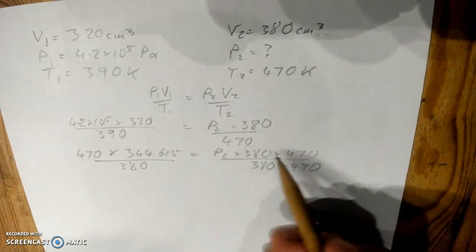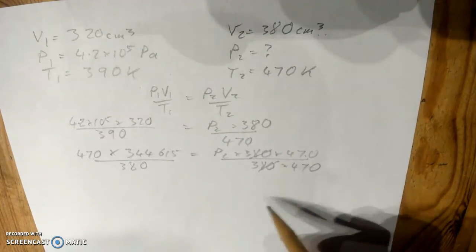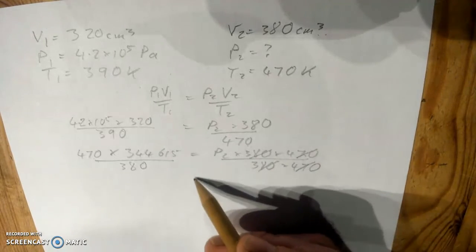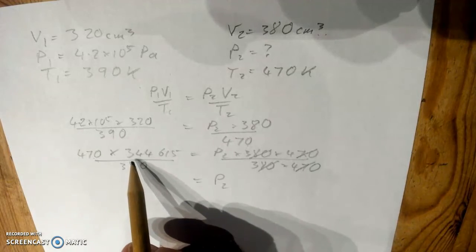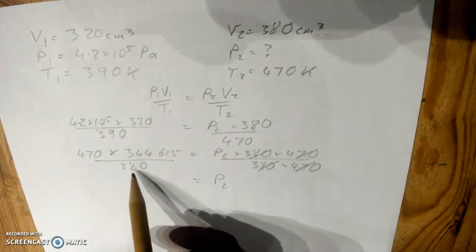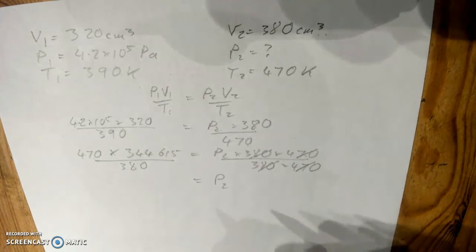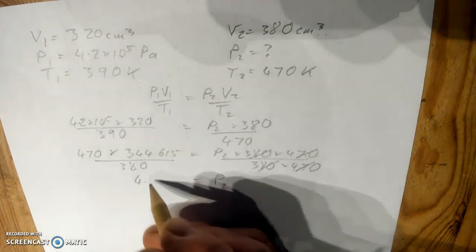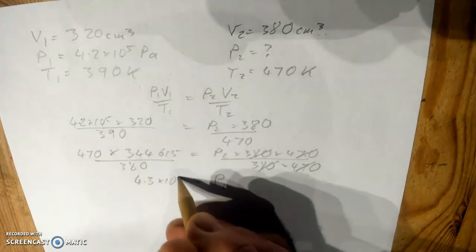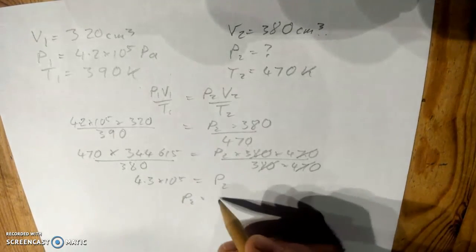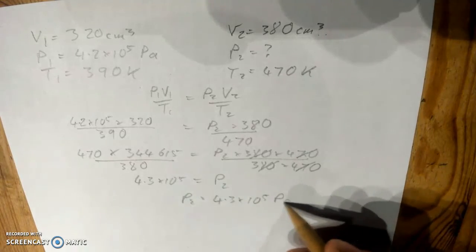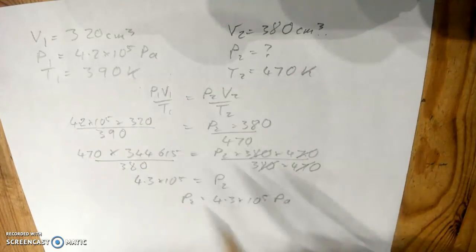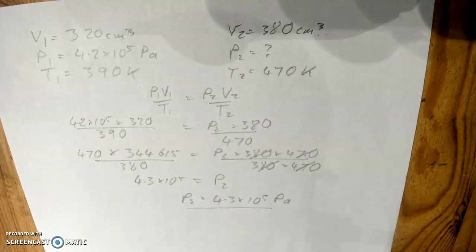So, on this side now, the 380s cancel, the 470s cancel, so we've got P2, and that's equal to 470 times the 344,615 we had, divided by 380, you do that in your calculator, and you'll get 4.3 times 10 to the power of 5, so P2 is 4.3 times 10 to the power of 5, pascals, which was the unit of pressure that we had from the top there, and that's...